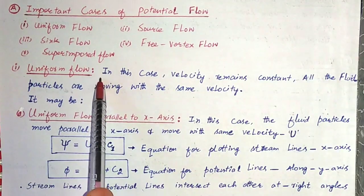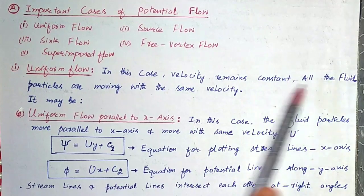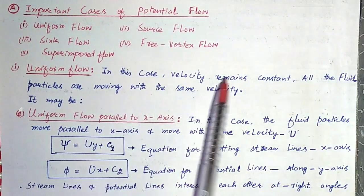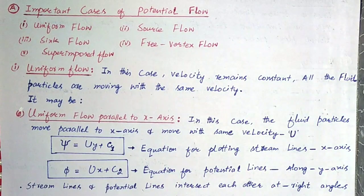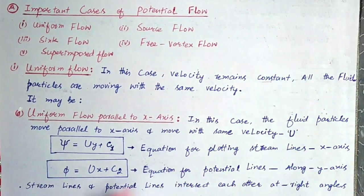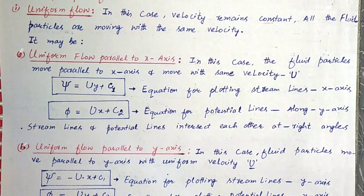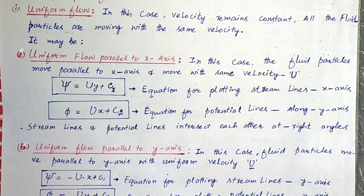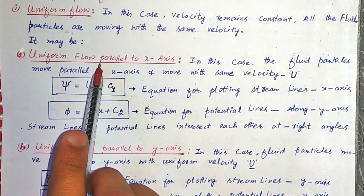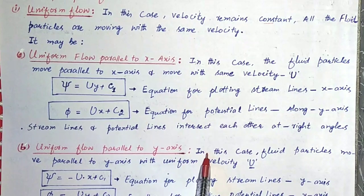First, we will discuss uniform flow. In this case, velocity remains constant and all fluid particles are moving with the same velocity. The fluid particles move parallel to the x-axis and move with the same uniform velocity.